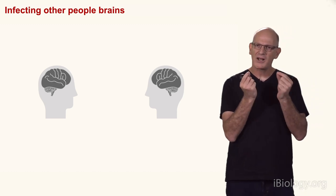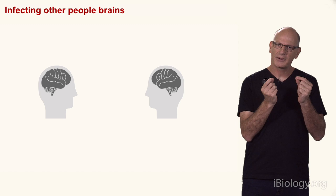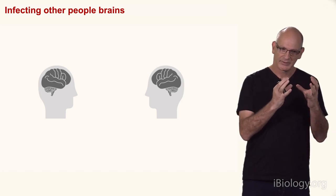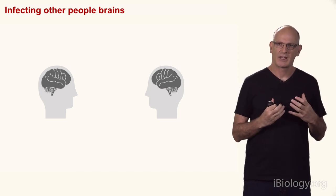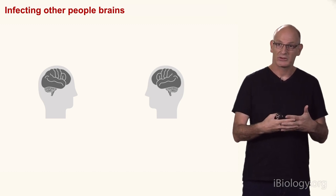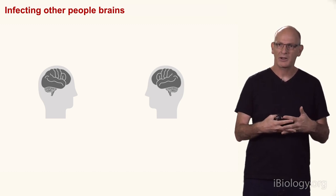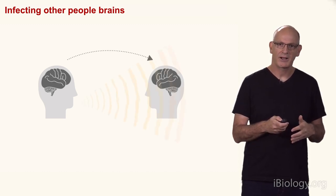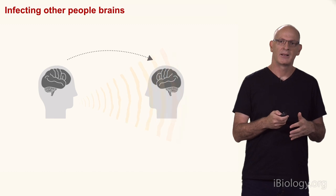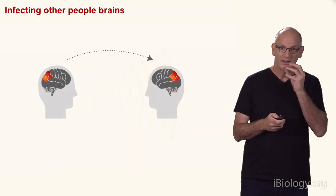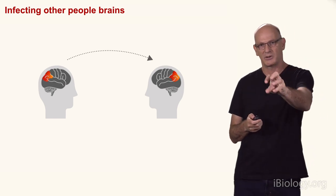In the first part, we saw how my brain patterns during memory are related to what happened before, and we saw that by speaking I'm making your brain responses similar to mine. And now we can combine these two together and ask: can I take my brain patterns that are related to my memories, and by speaking, plant my memories in your brains?